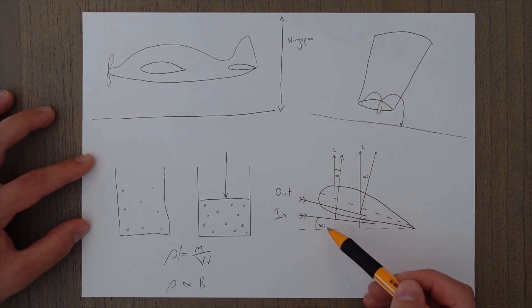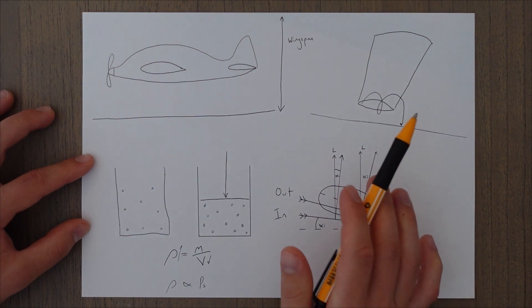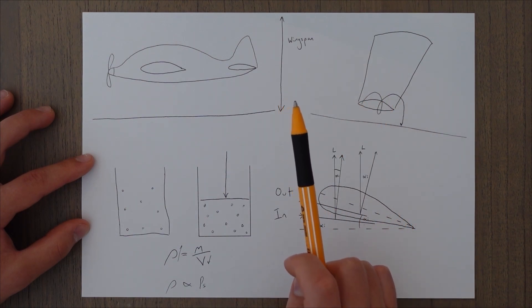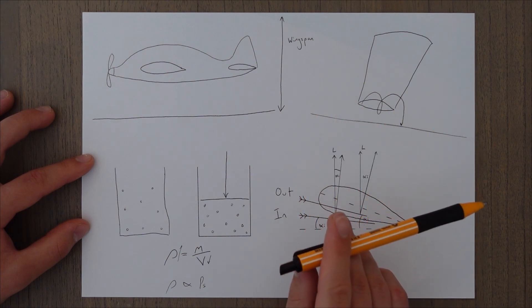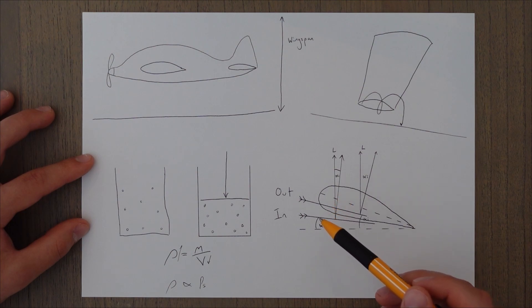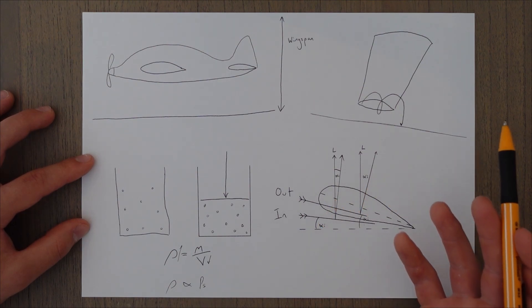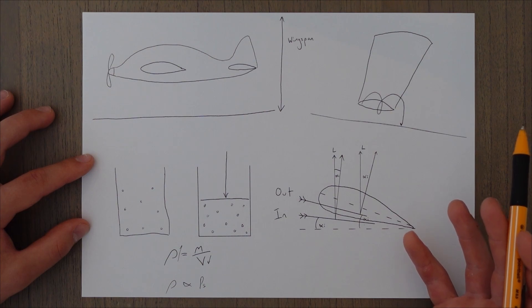The reduced induced angle of attack means that our reaction force is more angled towards lift, and less angled towards drag. Reducing the downwash means that we increase our effective angle of attack, and that reduces our stalling angle of attack.